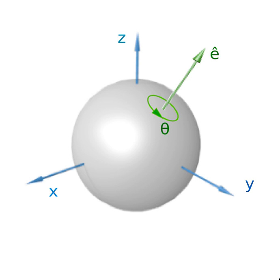Axes of rotation exist only in n≥2 dimensions. The plane of rotation is a plane that is invariant under the rotation. Unlike the axis, its points are not fixed themselves. The axis and the plane of a rotation are orthogonal. A representation of rotations is a particular formalism, either algebraic or geometric, used to parametrize a rotation map.